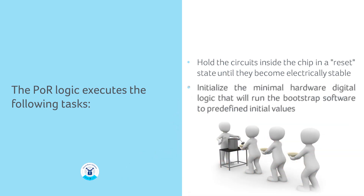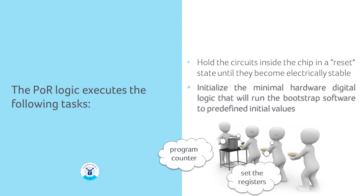The POR also initializes the minimal hardware digital logic that will run the bootstrap software to predefined initial values. It loads the first program address into the program counter of the CPU, sets all other CPU registers to 0, or 1, or another preset value, and sets appropriate control signals in address memory bus multiplexers, etc.